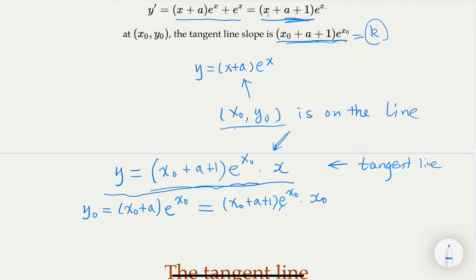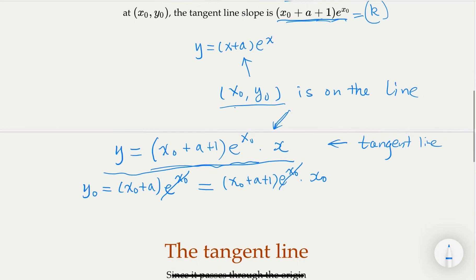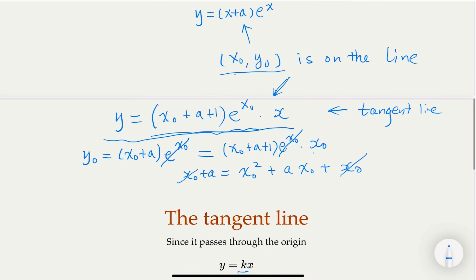You can probably cancel certain things. For example, e^(x₀) is never zero, so you can cancel that. Then you're going to express x₀ + a equal to x₀ times this term. So x₀² + ax₀ plus x₀. Now x₀ cancels, and what you get is x₀² + ax₀ - a = 0.